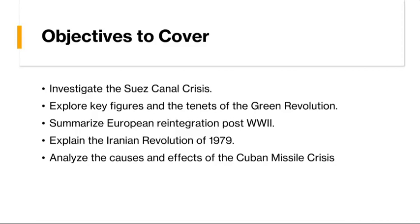We'll wrap up the week with a look at one of the most dangerous moments of the Cold War, the Cuban Missile Crisis. The crisis erupted when the United States discovered Soviet ballistic missiles deployed in Cuba, just 90 miles from its shores. Tensions escalated as the world teetered on the brink of nuclear war, with President John F. Kennedy and Premier Nikita Khrushchev engaging in a high-stakes diplomatic standoff. Through skillful diplomacy and back-channel negotiations, the crisis was peacefully resolved, but its legacy underscored the existential threat posed by nuclear proliferation and the imperative of superpower cooperation in maintaining global stability.